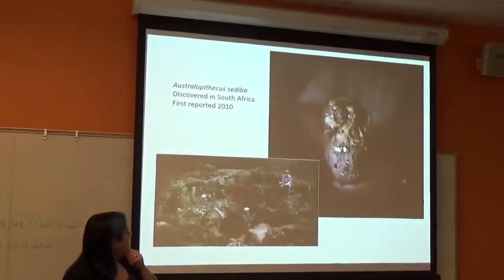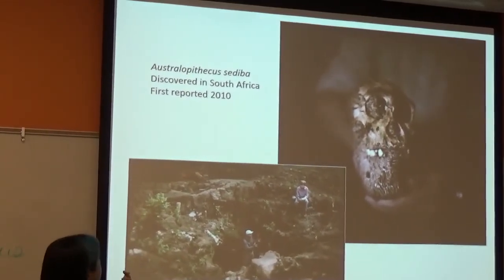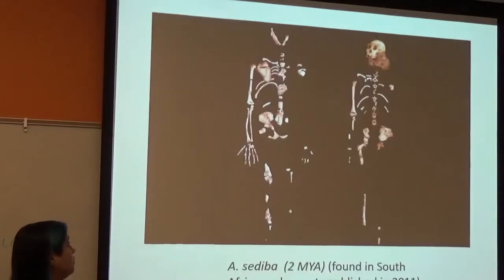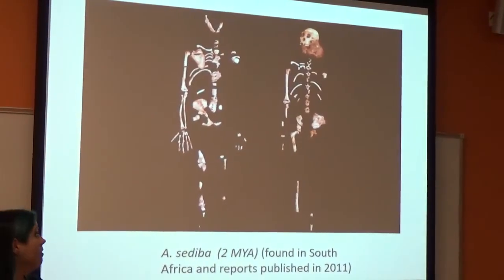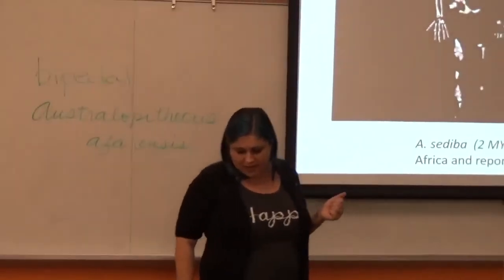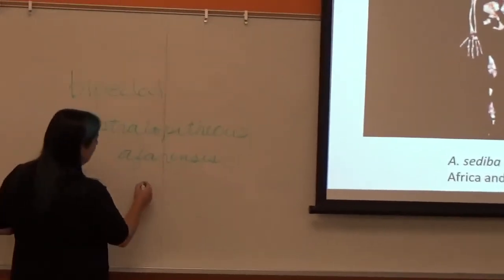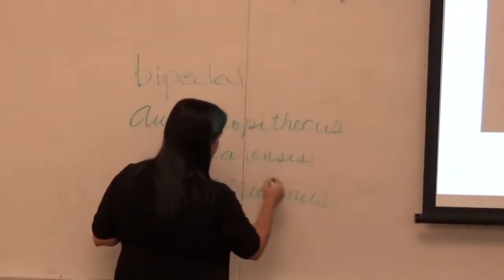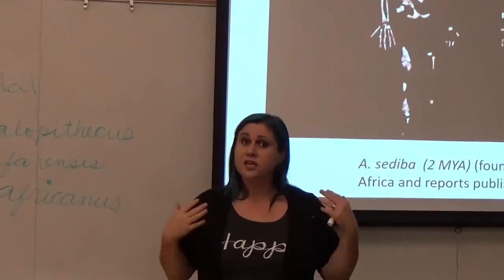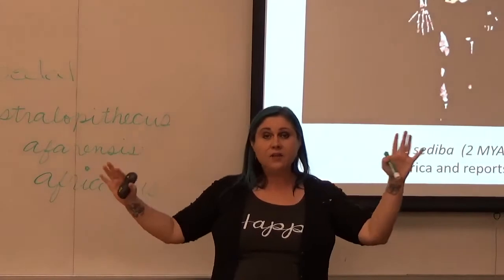Another member of the Australopithecus genus is Australopithecus sediba. We first found these fossils in Africa in 2010 — two beautiful specimens of an adult female and a teenage male. They lived about 2 million years ago and are probably descended from Australopithecus africanus. Sediba was definitely a fully bipedal animal and definitely a relative of ours.